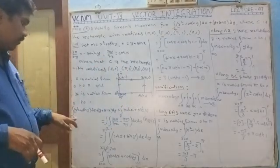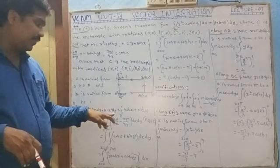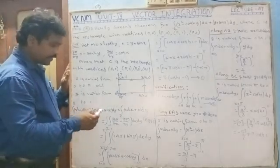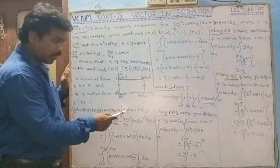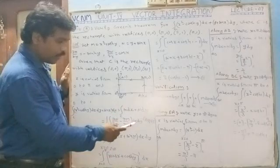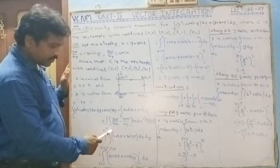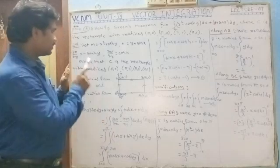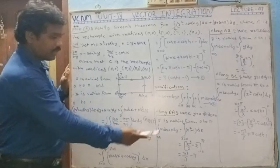By Green's theorem, the integral over C of x squared minus cosh(y) dx plus y plus sin(x) dy equals the double integral of (∂N/∂x minus ∂M/∂y) dx dy. With x varying from 0 to π and y from 0 to 1, this becomes the double integral of (cos(x) minus (minus sinh(y))) dx dy, which is cos(x) plus sinh(y).